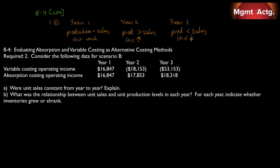Now consider Scenario B. Variable costing operating income goes from $16,847 in year one, to negative $18,153 in year two, to negative $53,000 in year three. Since selling price, variable cost per unit, and the fixed cost structure are all constant across the three years, the declining operating income under variable costing means sales must be decreasing each year. This is a consistent, worsening downward trend in revenues.